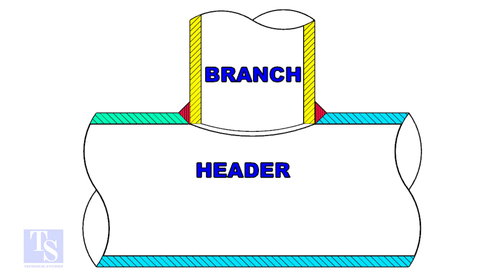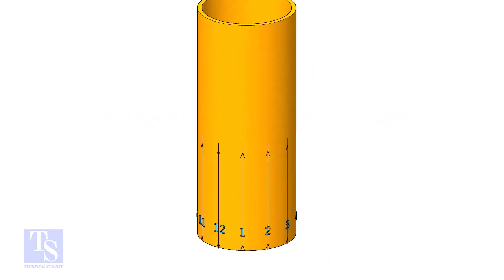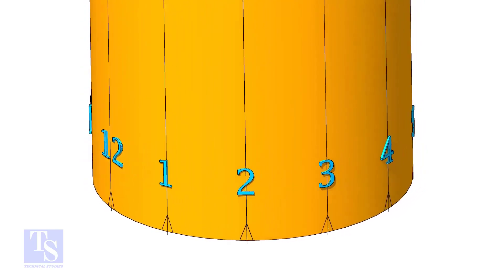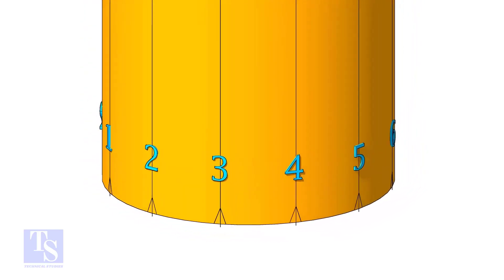In this method, the branch size shall be 2 to 3 inches less than the header size. Divide the branch pipe into equal parts. In this case, I divide the pipe into 12 parts.